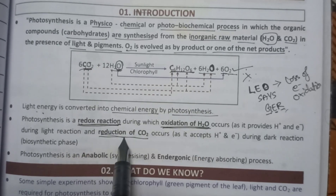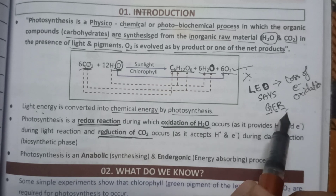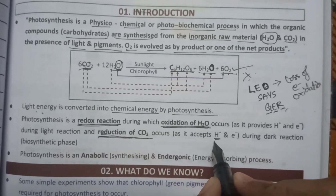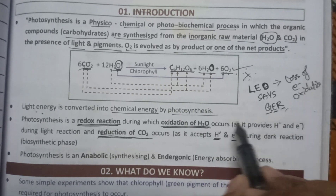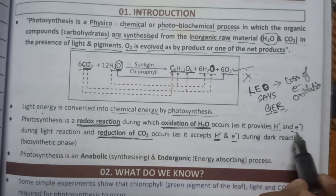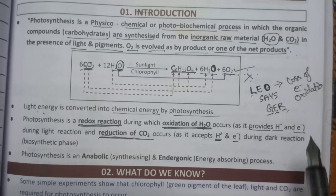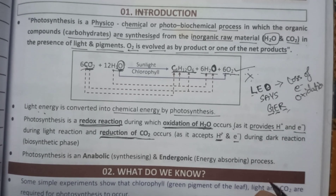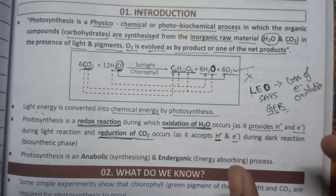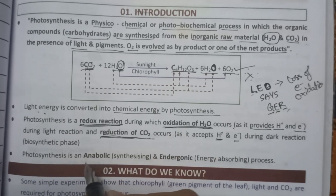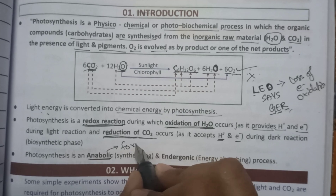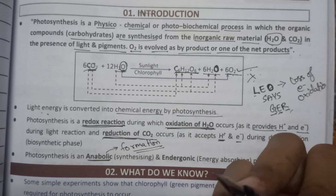Carbon dioxide is going to get reduced — reduction of carbon dioxide is happening, which means gain of electrons. Carbon dioxide accepts hydrogen H+ ions or electrons. Water is oxidized — it loses either electrons or H+ ions, providing H+ ions or electrons. This is the light reaction. Photosynthesis is a complete process: the first half is the light reaction and the second half is the dark reaction. Photosynthesis is also an anabolic process, meaning bond formation — glucose is formed, that is synthesizing.